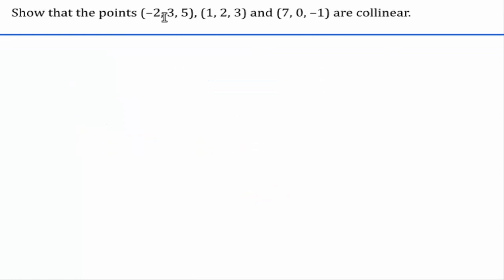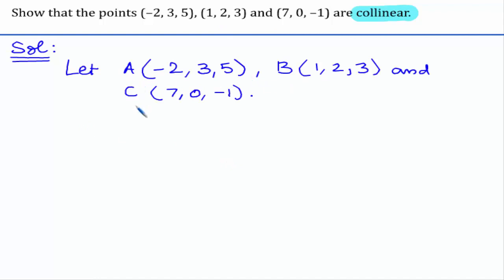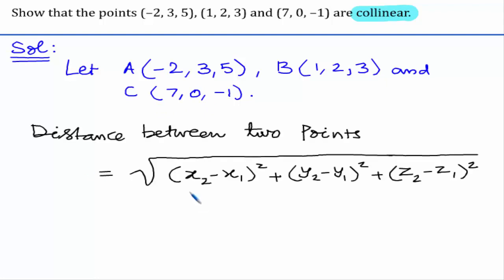In this problem, we are given 3 points and we need to show that they are collinear. Collinear means the points lying on the same line. Let us assume the three points as A, B, and C. The formula to find the distance between two points is the square root of (x2 minus x1) whole square plus (y2 minus y1) whole square plus (z2 minus z1) whole square.